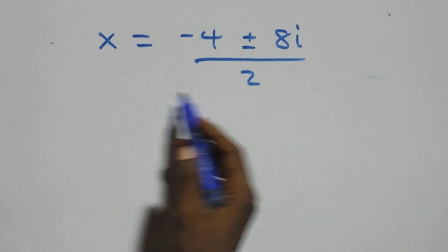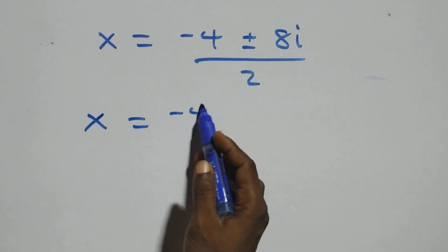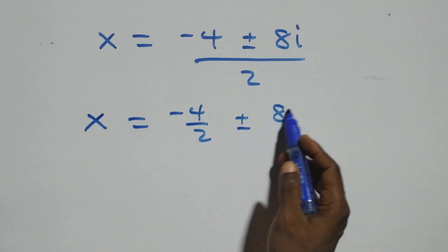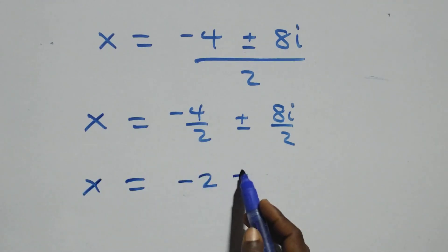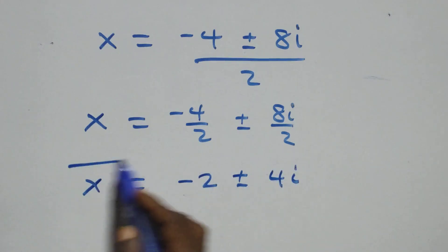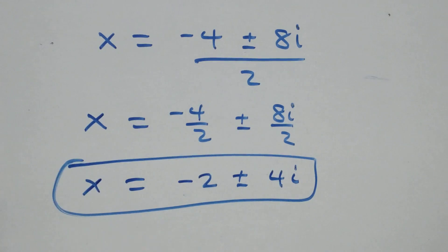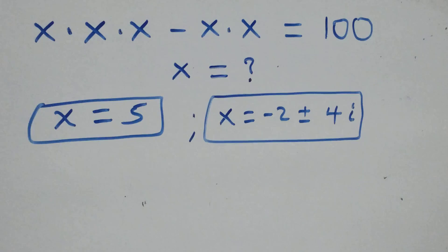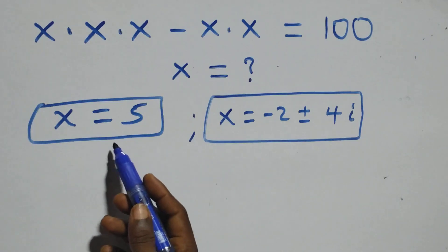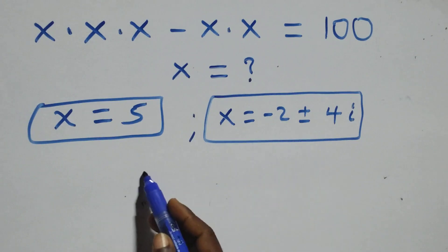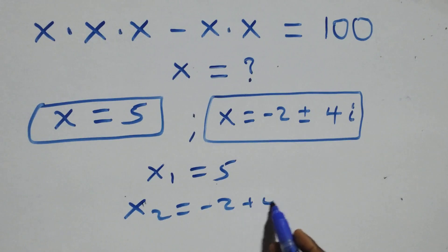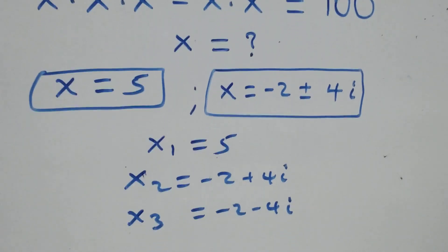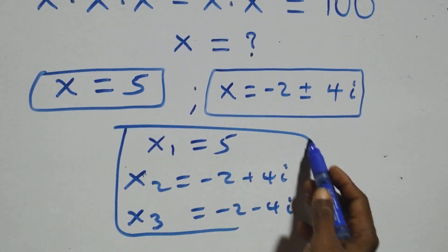Separating into two fractions: x equals to minus 4 over 2 plus or minus 8i over 2. That gives x equals to minus 2 plus or minus 4i. So we have two complex solutions. Therefore, altogether in this problem we have three solutions: one real solution and two complex solutions. We write x1 equals to 5, x2 equals to minus 2 plus 4i, and x3 equals to minus 2 minus 4i. These are three solutions altogether: one real, two complex.